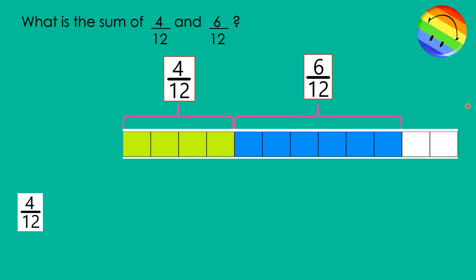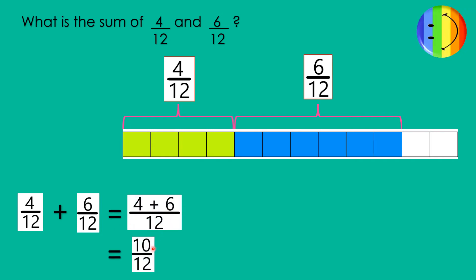Let's add them. 4 twelfths plus 6 twelfths equals, 4 plus 6 equals 10. Then, maintain the denominator or copy it, which is 12. What is the answer? 10 twelfths.